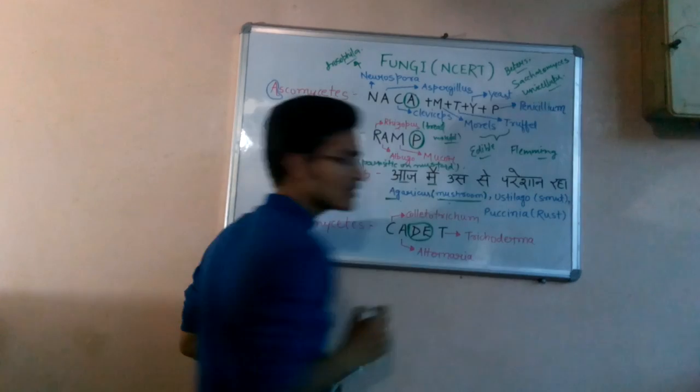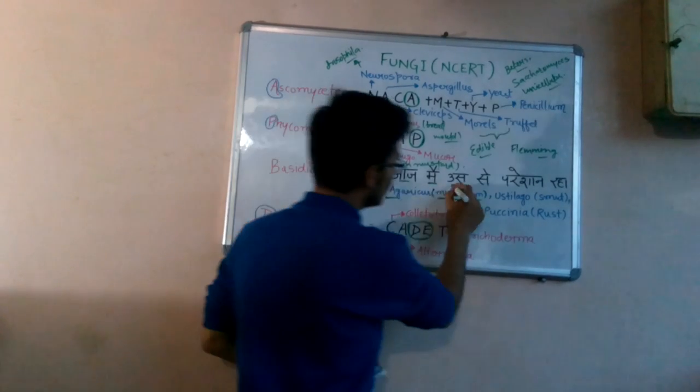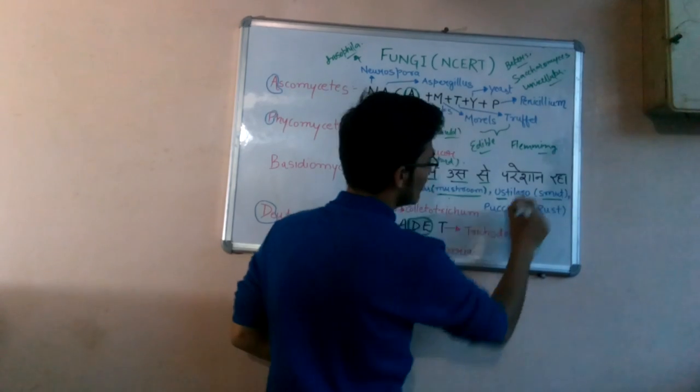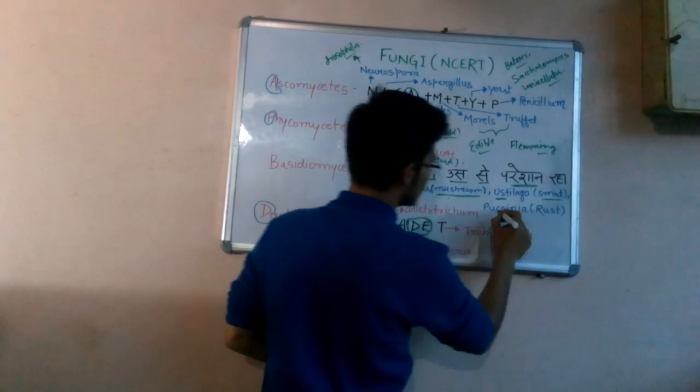The examples are: Aaj - that is Agaricus, Main - that is Mushroom. In NCERT it is mentioned in bracket because Agaricus is known as common mushroom. Ush simply means Ustilago. S means seh means Smut. Puccinia, pareshaan simply means Puccinia.